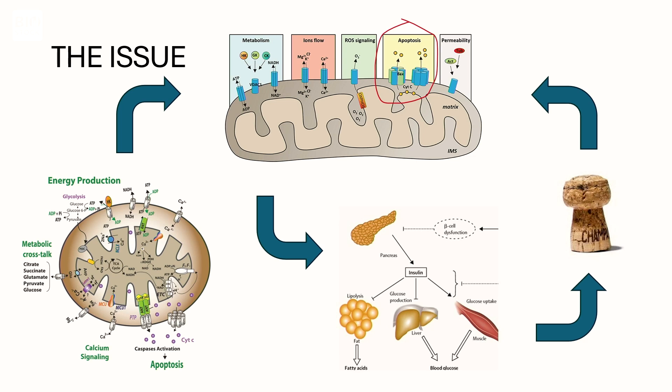Under certain circumstances it doesn't work. The culprit is VDAC1 — under certain circumstances, VDAC1 forms like a pore. It's supposed not to, but when it does, it lets the energy components ATP and ADP through, unregulated, and that means the cells shut down.